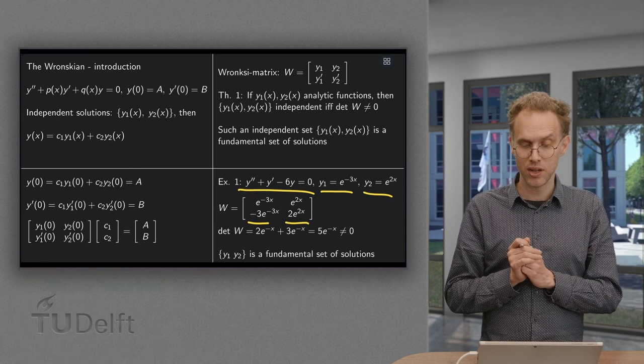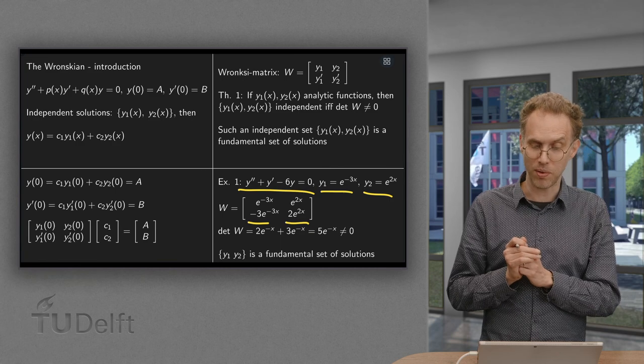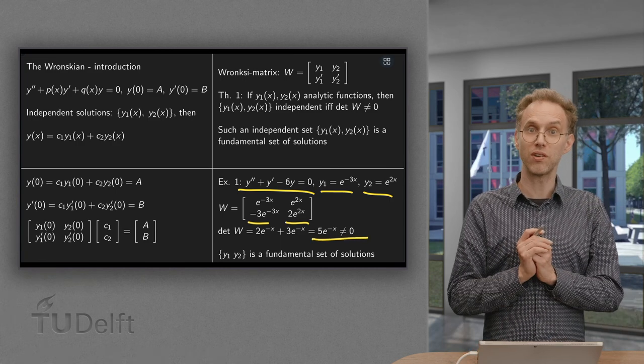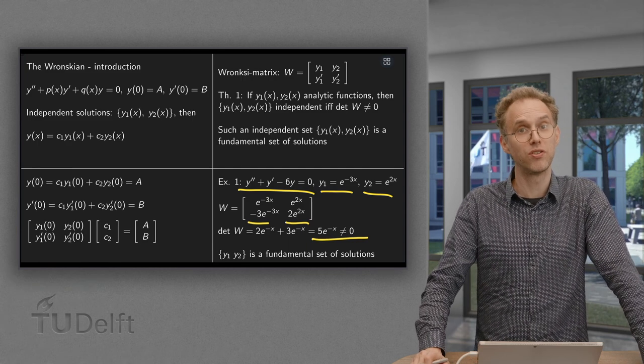We compute the determinant: 2 times e^(-x) minus (-3) times e^(-x) gives us 5 times e^(-x), which is not equal to 0, which means that our set {y1, y2} is a fundamental set of solutions.